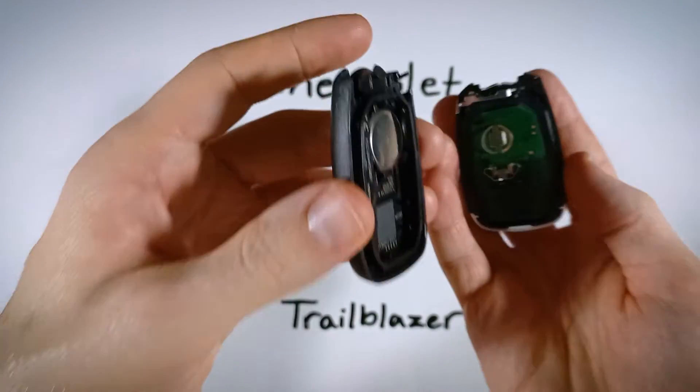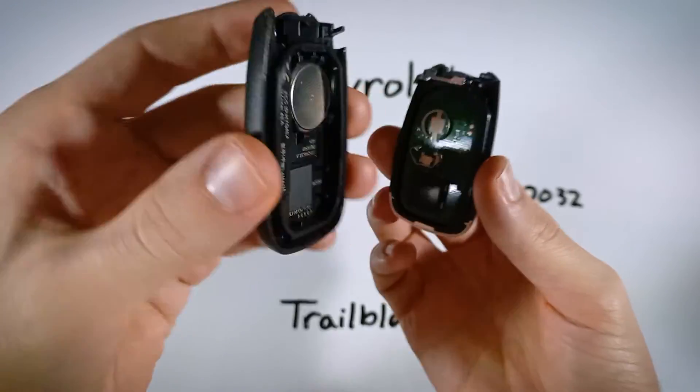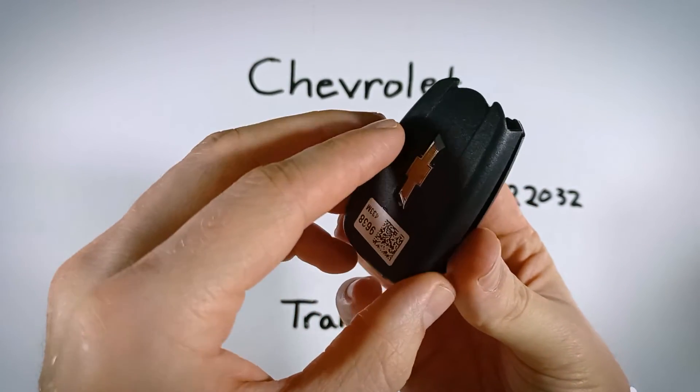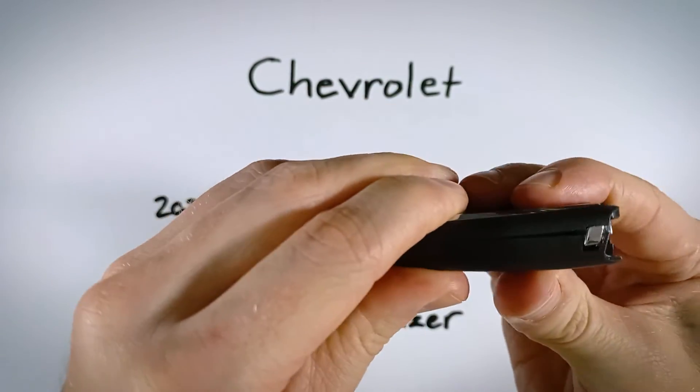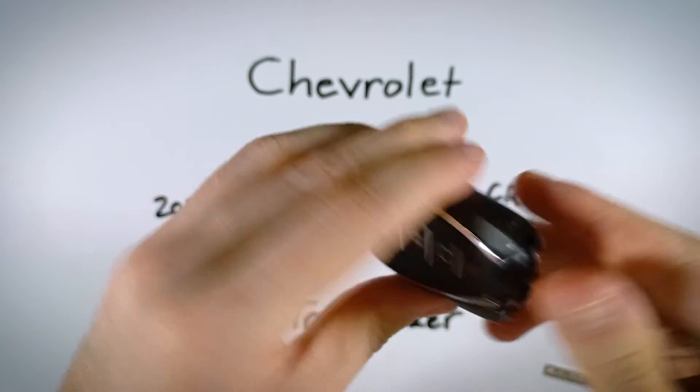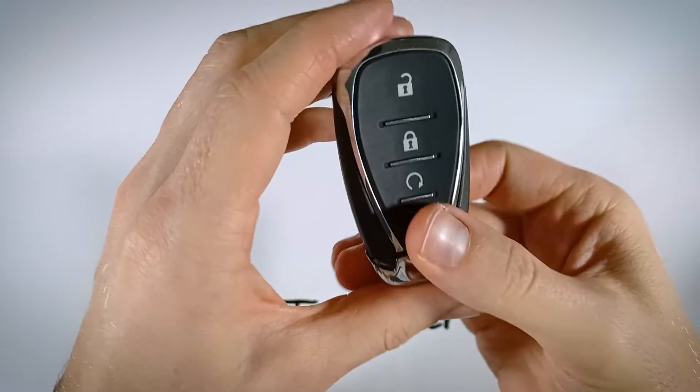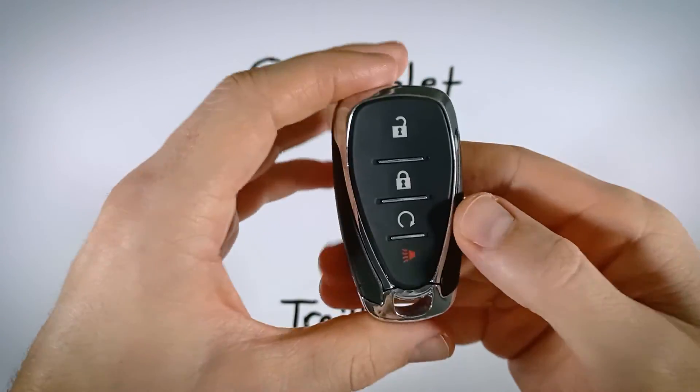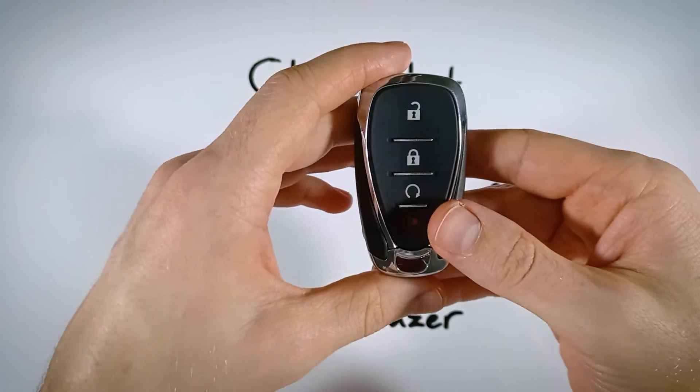And all we need to do now is click these two pieces back together. So go ahead and set the back on top of the front. Make sure everything is lined up, and then just give it a squeeze and pop your key back in there. And just like that, you are finished. You have a new battery in there, and you are good to go.